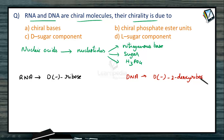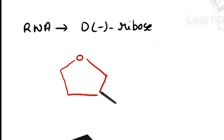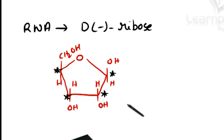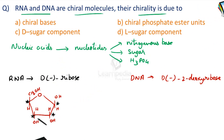If you know the structure of ribose, you can easily write down the structure of 2-deoxyribose as well. In the structure of D-ribose, multiple carbons are chiral — that is, each is attached to four different atoms or groups. Since chiral carbons are present in D-ribose, this sugar molecule is chiral, and as a whole, RNA is chiral.